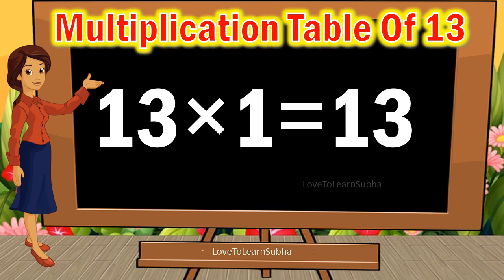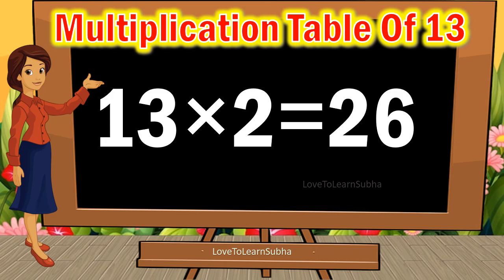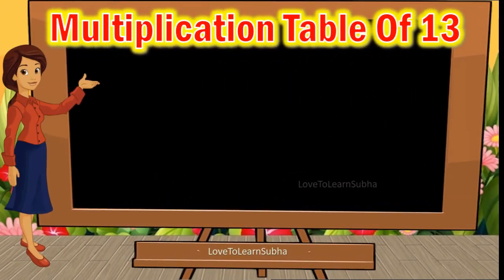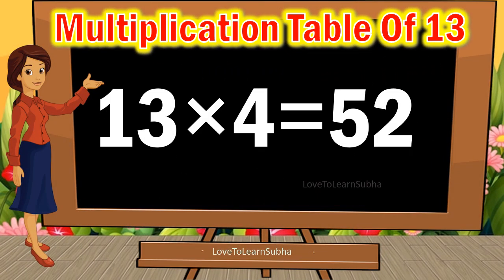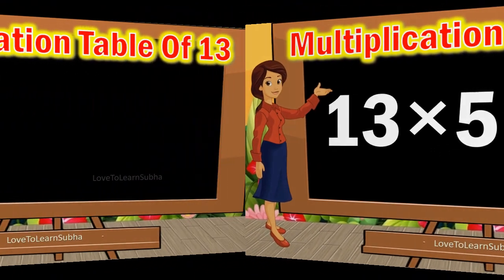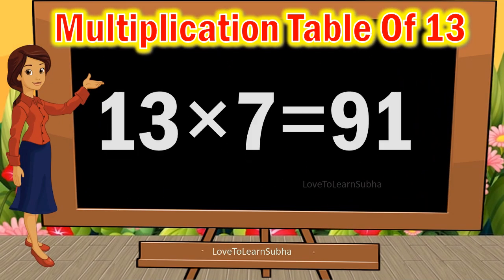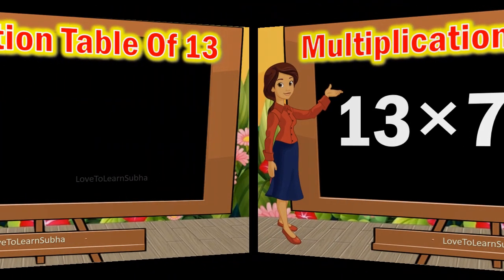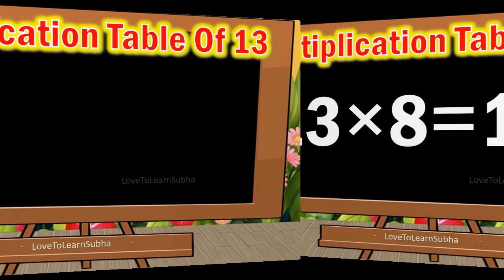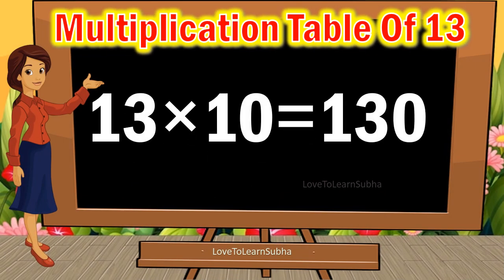13 ones are 13, 13 twos are 26, 13 threes are 39, 13 fours are 52, 13 fives are 65, 13 sixes are 78, 13 sevens are 91, 13 eights are 104, 13 nines are 117, 13 tens are 130.